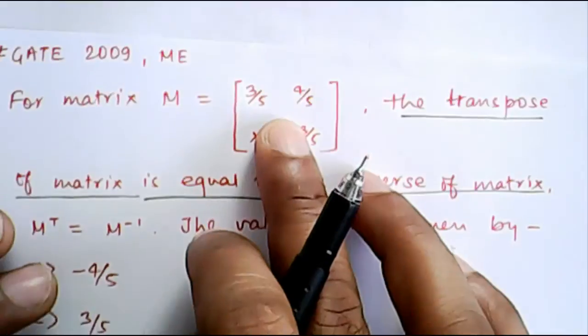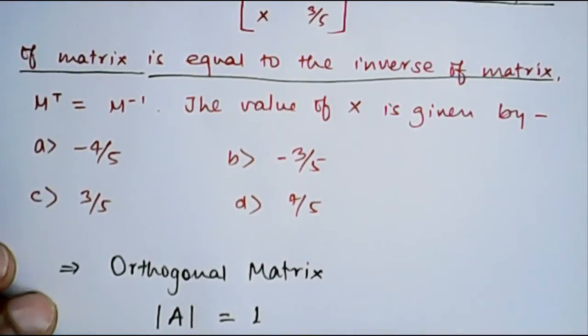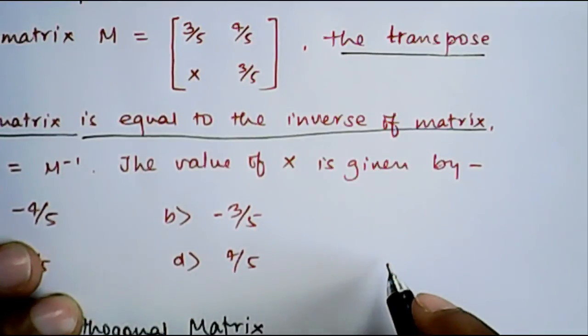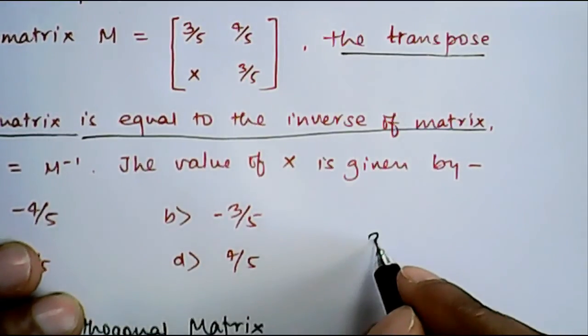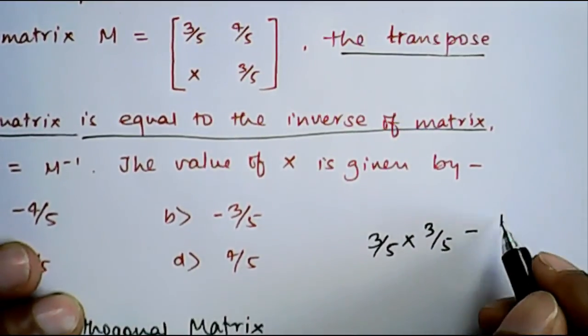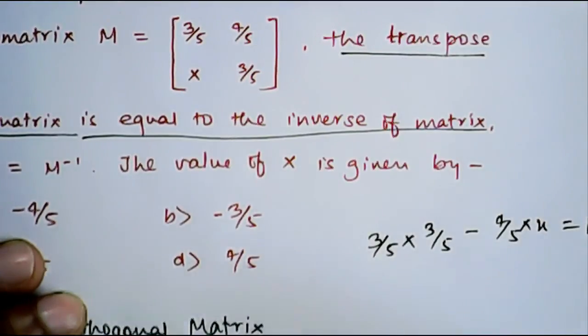Now we will simply solve this matrix and we will equate that determinant with equal to 1. So what will be the determinant? It will be equal to 3 by 5 into 3 by 5 minus 4 by 5 into x which is equal to 1.